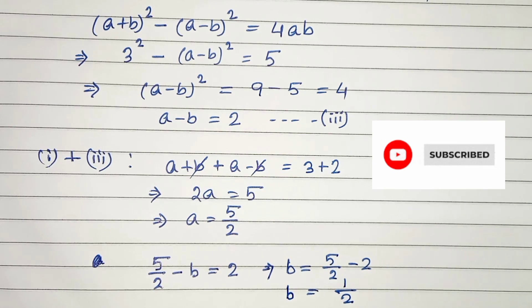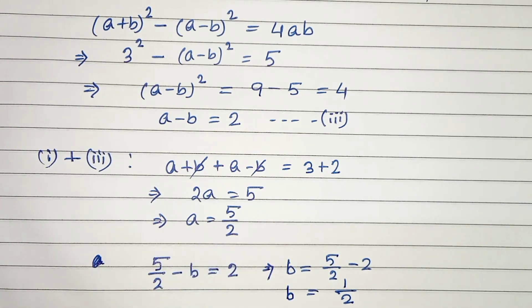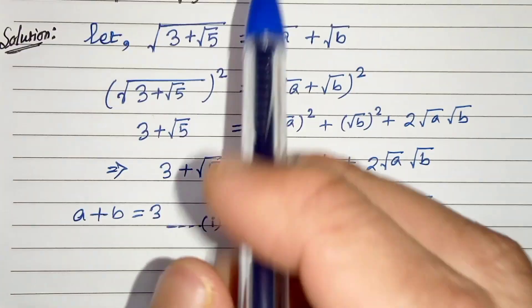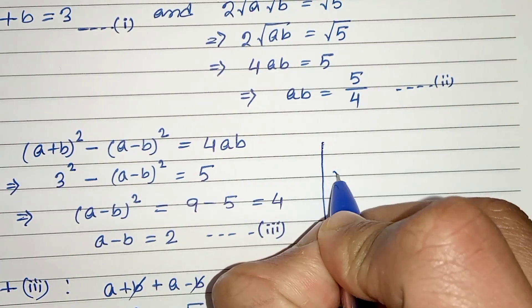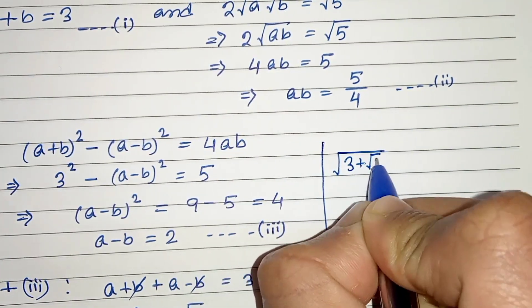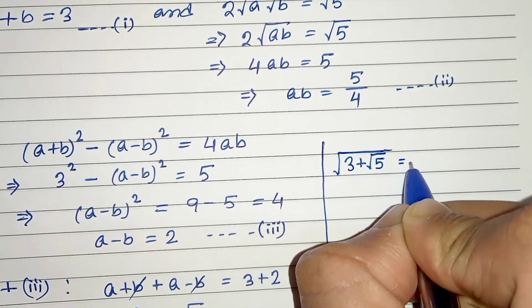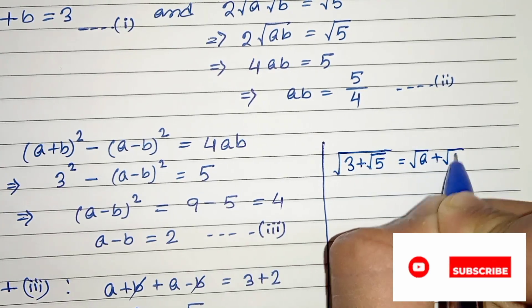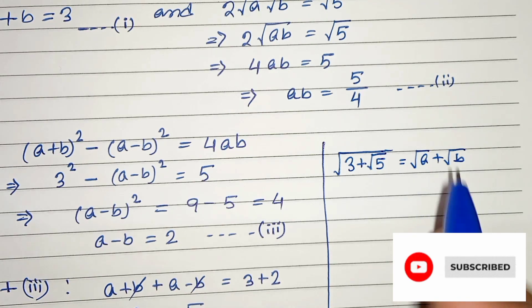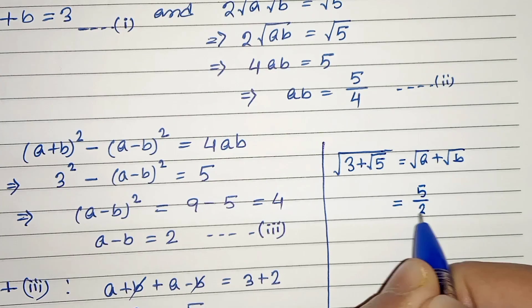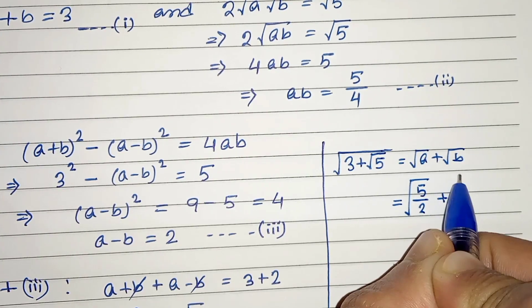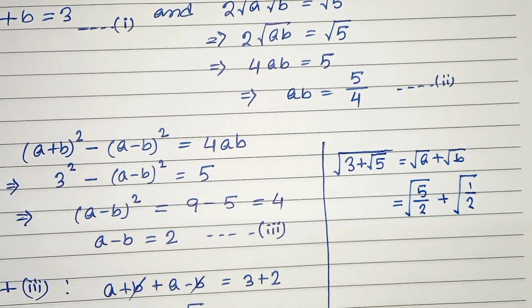Now let's put the values a equals 5 by 2 and b equals 1 by 2 back into our expression. We can write root of 3 plus root 5 as root a plus root b. Therefore, substituting: root under 5 by 2 plus root under 1 by 2. This is our solution.